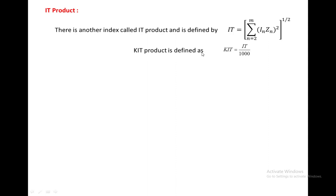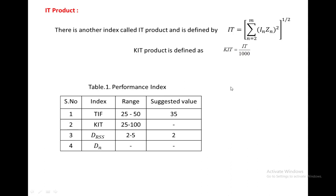The performance index values used for filter design are: TIF ranging from 25 to 50, with a suggested value of 35; KIT value from 25 to 100; D_RSS from 2 to 5, with a suggested value of 2; and D_N can take any range of values.